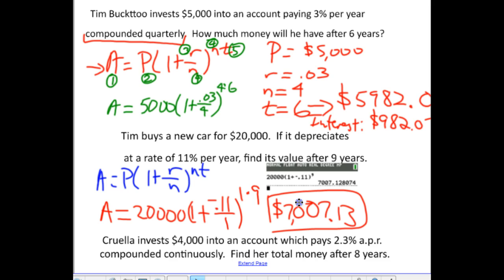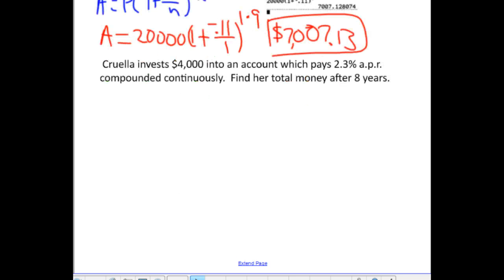And, that's how we get the depreciated value. Okay, let's take a look at one more problem. We'll call it a day. And, this time, we've got Cruella investing $4,000 into an account, which pays 2.3% APR. You ever hear that in a car commercial? Where they, right there, at the end, the guy talks really fast. The 2.3% APR financing available for well-qualified buyers, right? Well, the APR stands for the actual phrase annual, which means yearly, percentage, and then rate. APR is the annual percentage rate, right?